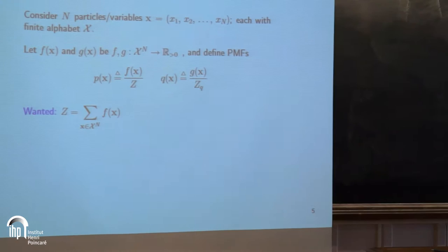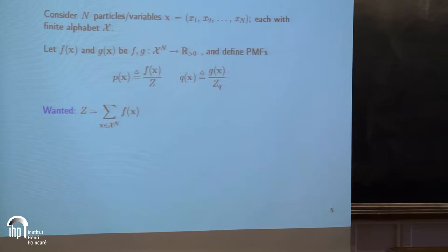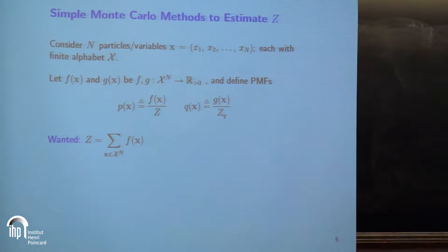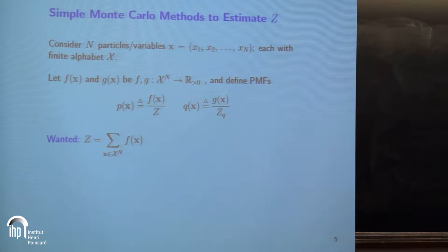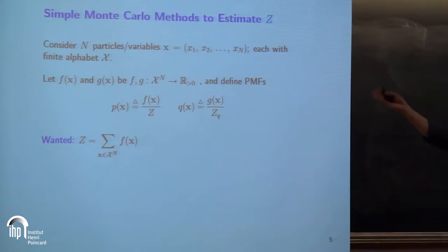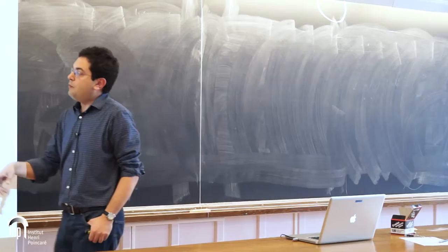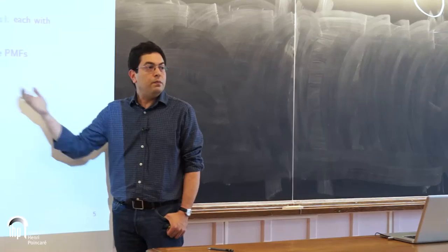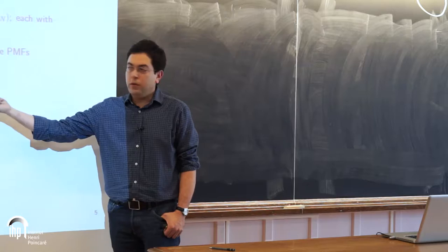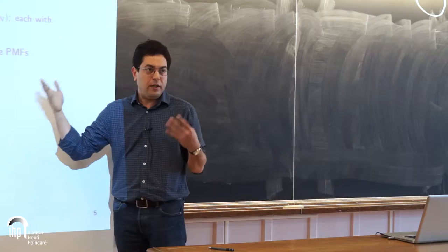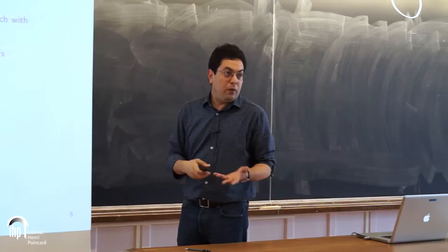Here are two basic, very simple Monte Carlo methods. We have n variables or particles, x1 through xn. x is a vector and each takes values in a finite alphabet, script x. I have two positive functions from the state space, and according to them I define two probability mass functions: p and q. The normalization constant of p is Z, which I want to compute. Suppose I have another distribution q, a PMF on this state space, for which zq is known or I know how to sample from q.